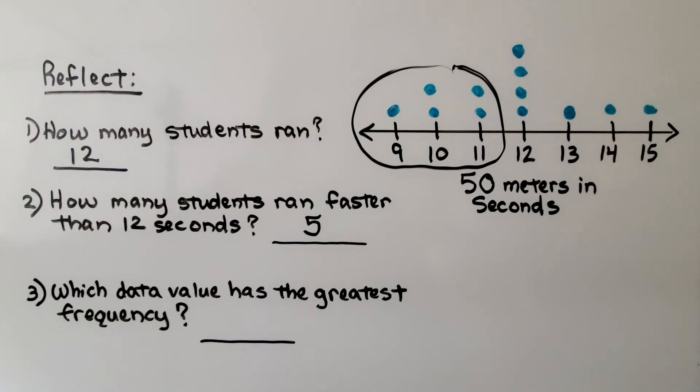Which data value has the greatest frequency? We look for the number that has the most dots. It would be 12. Twelve seconds was the greatest frequency.